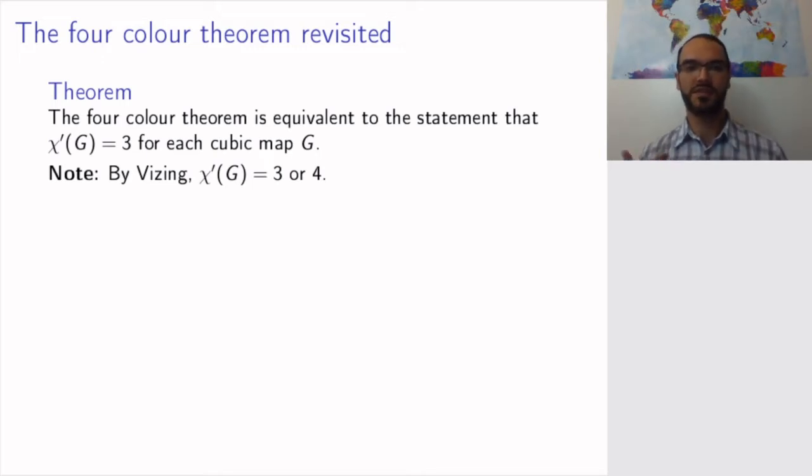Now, of course, we will not prove this theorem, because if it's equivalent to the four-color theorem, its proof would be just as hard somehow. Rather, this theorem is helpful, because since the four-color theorem has been proved, we know now that every cubic map is 3-edge colorable. But what I will now show you the proof of is this theorem, which states the equivalence of the two theorems.